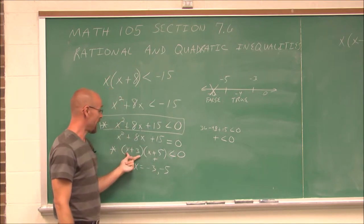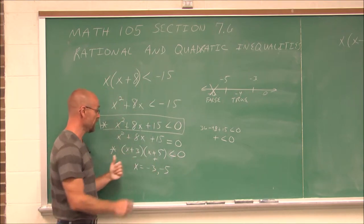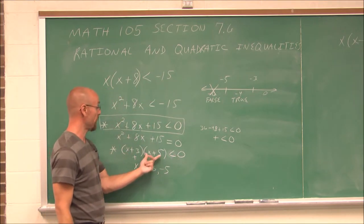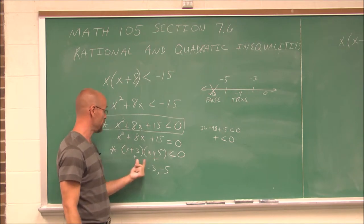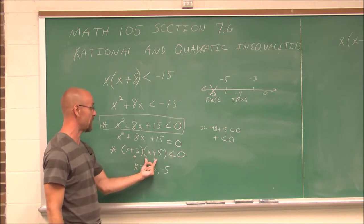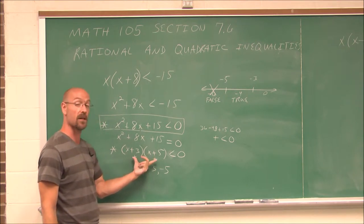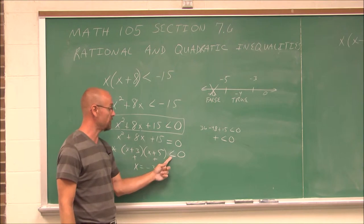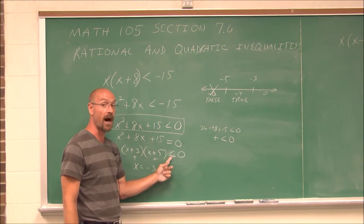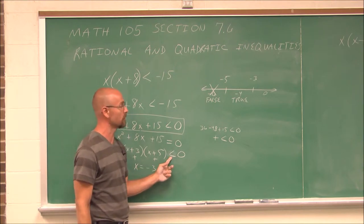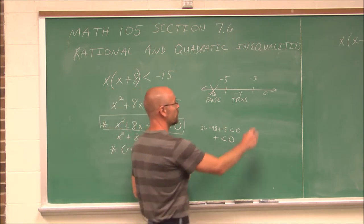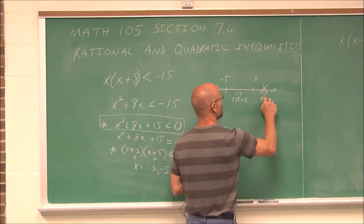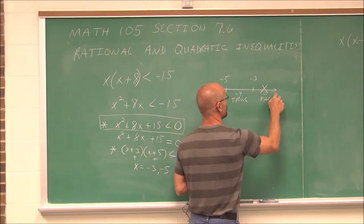If I add 0 to 3, it's positive. If I add 0 to 5, it's positive. A positive times a positive is a positive value. Positive values are not less than 0, so this interval is false.